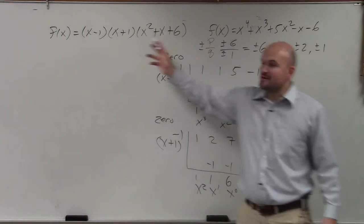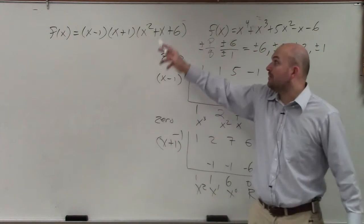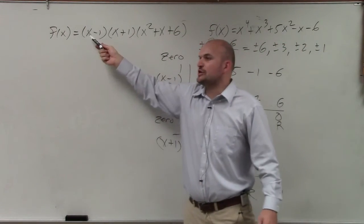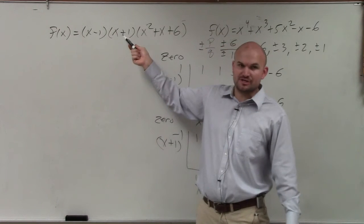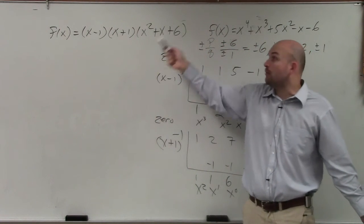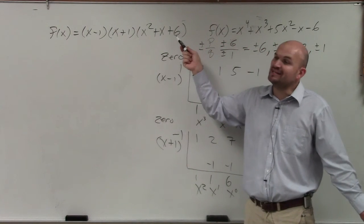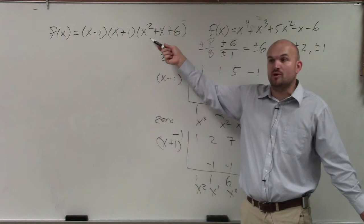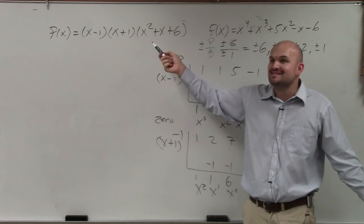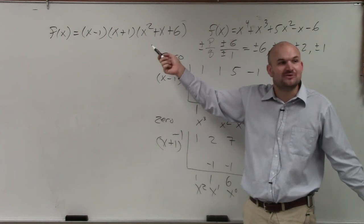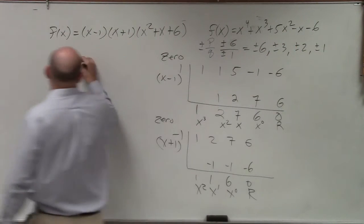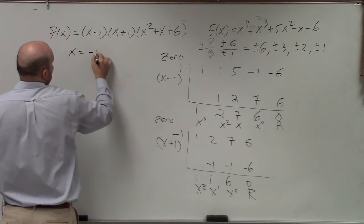Does everybody agree that's my factored form? Yes. Now, if you were to use the zero product property, we already know 1 is a zero and negative 1 is a zero. However, this remaining quadratic — we have to factor it. What two numbers multiply to give 6 and add to give 1? None. It's not factorable. So you have to use the quadratic formula.